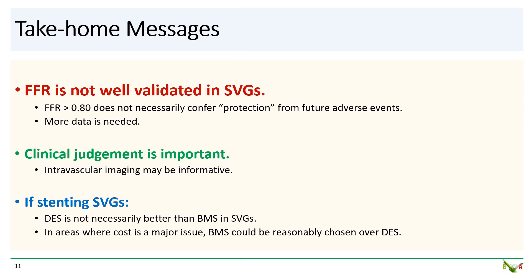Take-home messages: The most important point is to remember that FFR is not well-validated in saphenous vein grafts. An FFR of 0.8 does not necessarily confer protection from future adverse events — more data is needed. Clinical judgment is important, and as this case showed, intravascular imaging such as OCT can help with your decision. And if you do decide to stent saphenous vein grafts, this is one area where bare metal stents may perform just as well as drug-eluting stents. So in situations where cost is a major issue, BMS could be reasonably chosen over DES for stenting saphenous vein grafts.